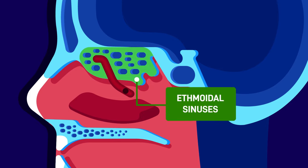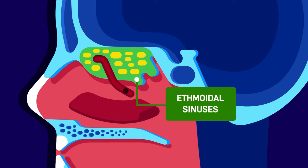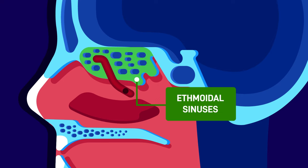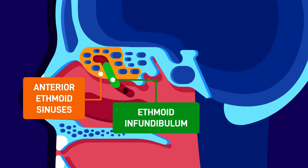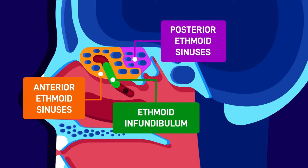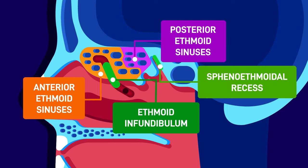Ethmoid sinuses. The ethmoid sinuses consist of many paired cells with complex structures. They are usually divided into the anterior ethmoid sinuses, which drain into the ethmoid infundibulum, and the posterior ethmoid sinuses, which drain to the sphenoethmoidal recess in the superior meatus.